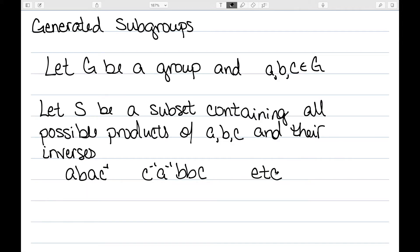So we can have repetition, we can repeat the factors, and we can multiply them in any order, but we want to contain all the possible products as well as the inverses. Then we can see that this is a subgroup. It does contain all products, and by definition it also contains the inverses. Then we say S is the subgroup of G generated by A, B, and C.